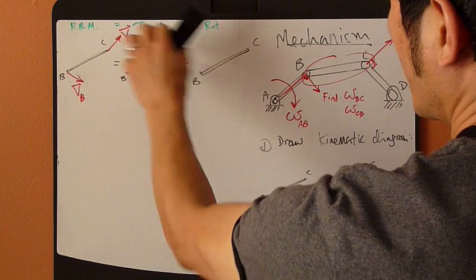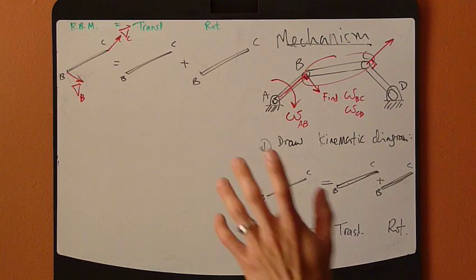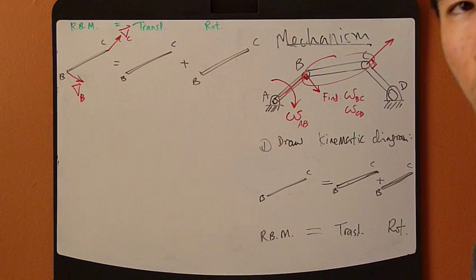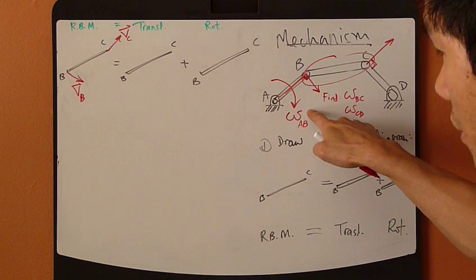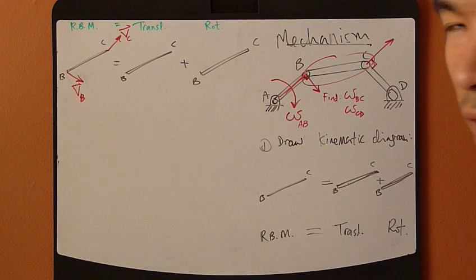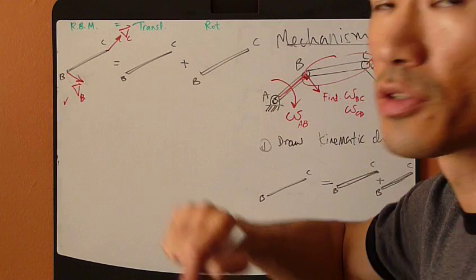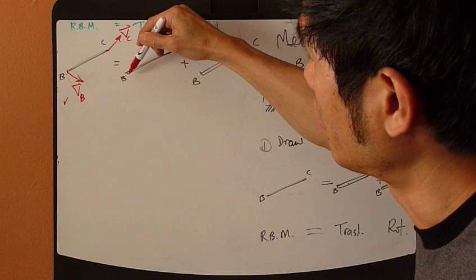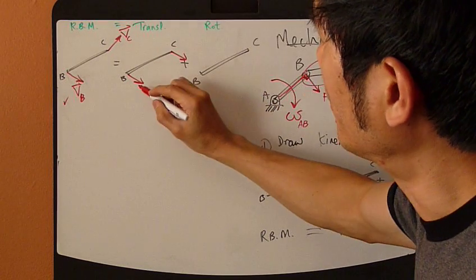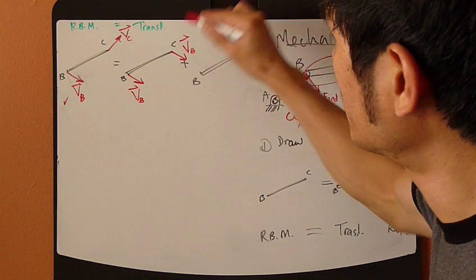Or I can use VC - the whole thing is translating up and then the rotation. Either one doesn't matter, but usually we take the velocity that is a known quantity. In this case, omega AB is given, which means VB can be found quite easily. So VB is known, so I'm going to use VB as the translational velocity.